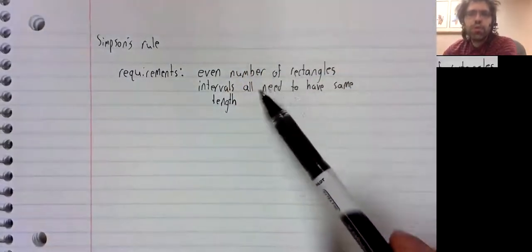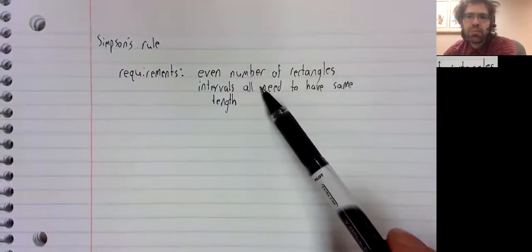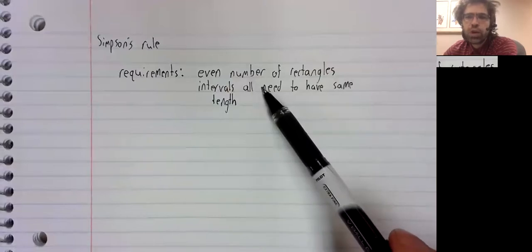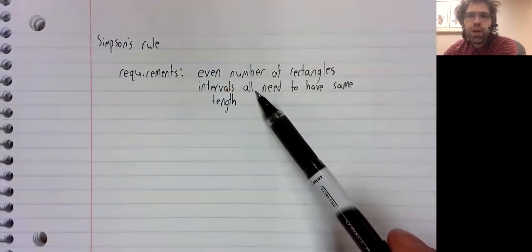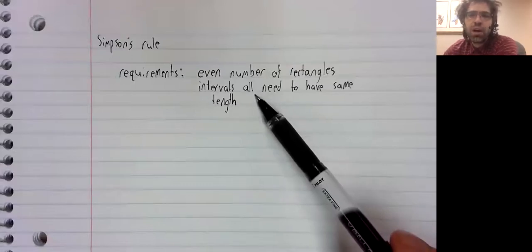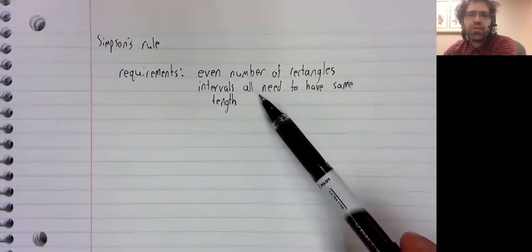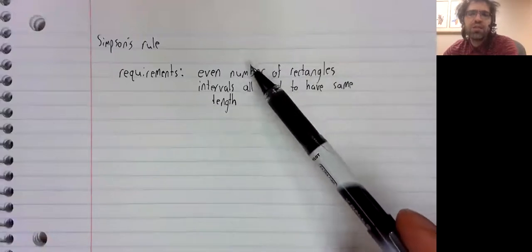The trapezoidal rule simplifies if they all have the same length, but it's not a requirement. Likewise, when we stated the midpoint rule, we assumed that the intervals all had the same length, but you could take the midpoint no matter what the lengths are. Here, it's a genuine requirement, as is this.